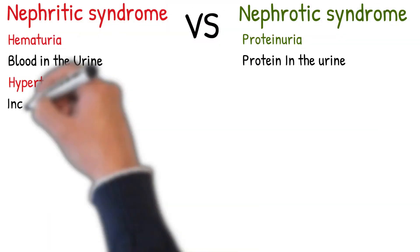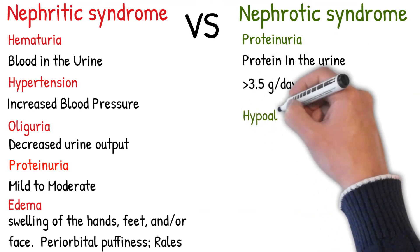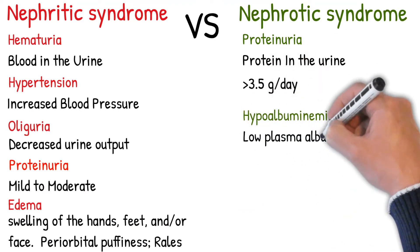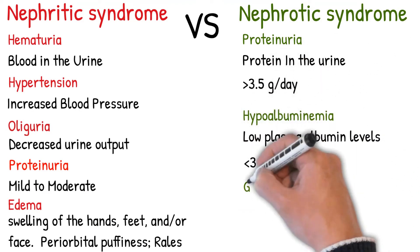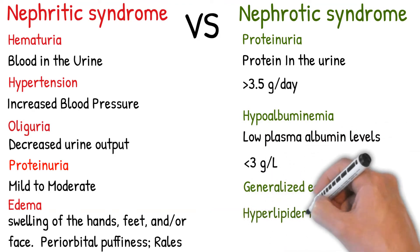While the classical presentation of nephrotic syndrome is: excessive proteinuria greater than 3.5 grams/day, low plasma albumin levels (hypoalbuminemia) less than 3 grams/L, generalized edema, and hyperlipidemia.